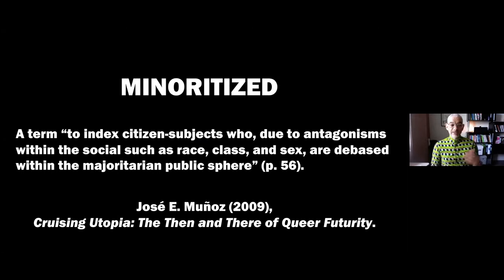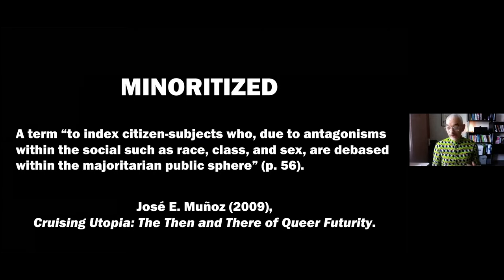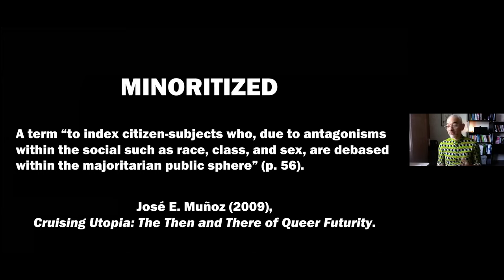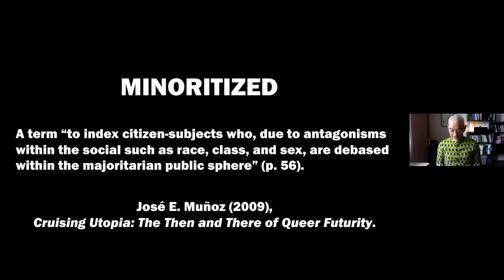First, the term 'minoritized.' Muno writes that it is a term to index citizen subjects who, due to antagonisms within the social — such as race, class, and sex — are debased within the majoritarian public sphere. As opposed to terms like underrepresented, minority, or underserved, 'minoritized' draws attention to multiple forms of identity or belonging and to pervasive social asymmetries. This term makes clear that when we talk about life in working class communities of color experiencing racist aggression, economic precarity, housing displacement, or environmental stress, we're not talking about logical consequences of demography — we are talking about relations of power and authority, often filtered through some organ of the state. The term minoritized reminds us that the public sphere itself is defined, constituted, and managed according to the specific interests of the dominant cultural group.